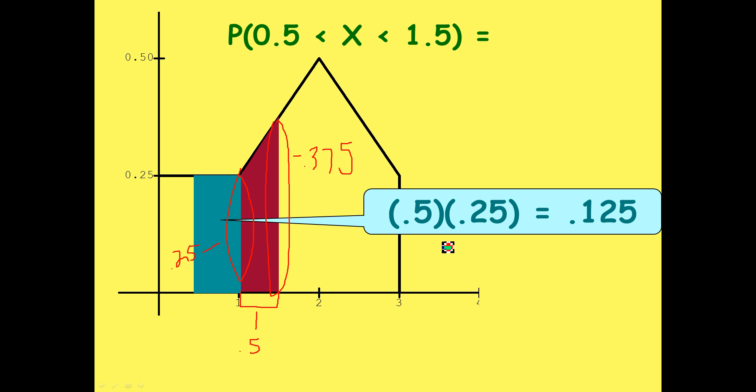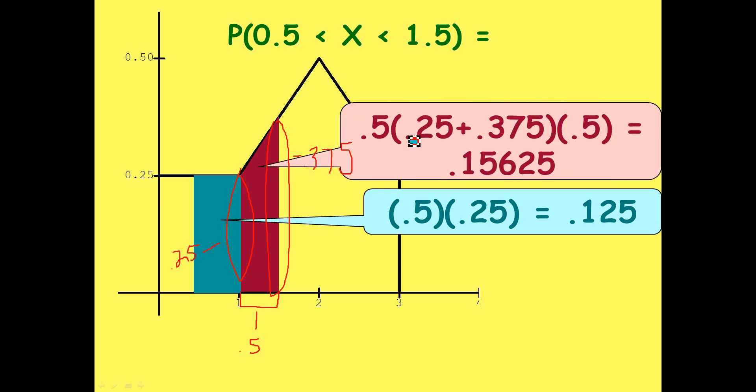So, we have our two bases and height, so now we can just use the formula for the area of a trapezoid. First, sum of the bases, 0.25 and 0.375, divided by 2, which is essentially multiplying by 0.5, times the height, which is on the x-axis of 0.5.